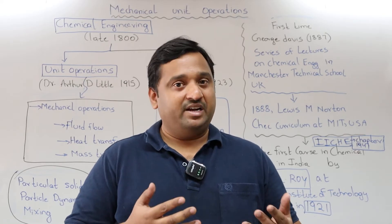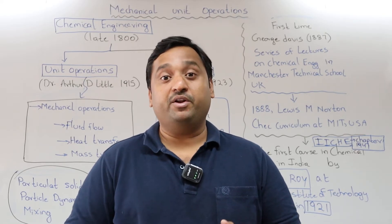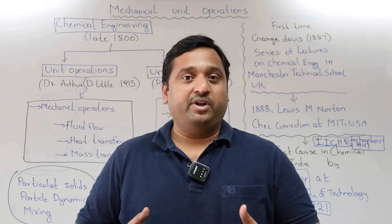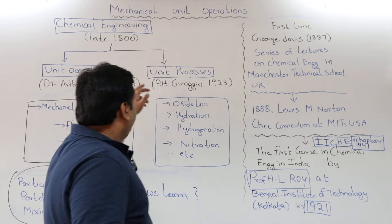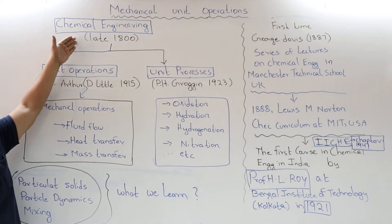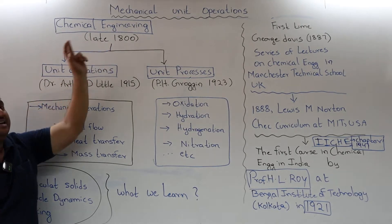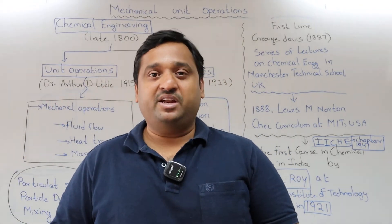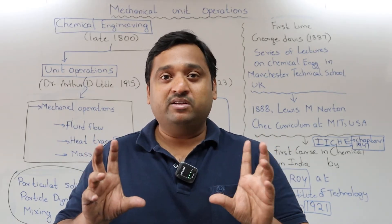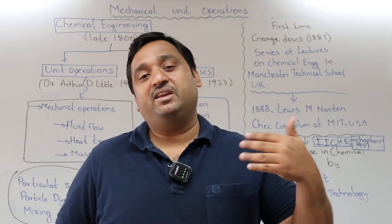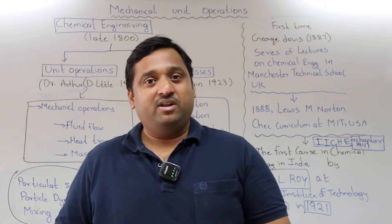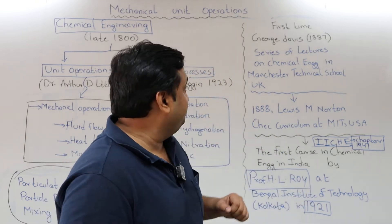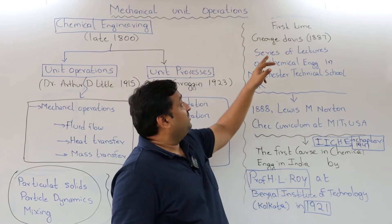In the introduction, let us discuss what exactly the words 'unit operations' and 'unit processes' mean and what their history is. Chemical engineering started in the late 1800s. Even though they were using the principles of science and technology, the term 'chemical engineering' had not yet been coined, but it still existed. Later, people came up with the term. As far as chemical engineering is concerned, George Davis in 1887...